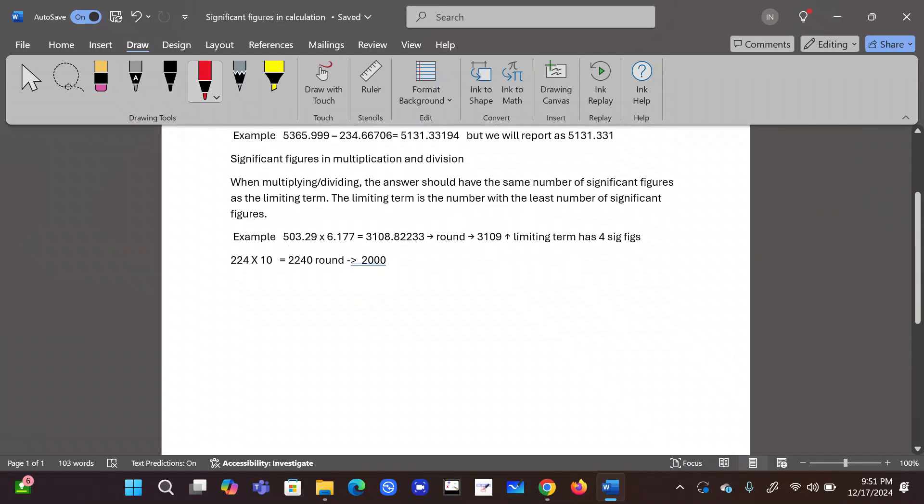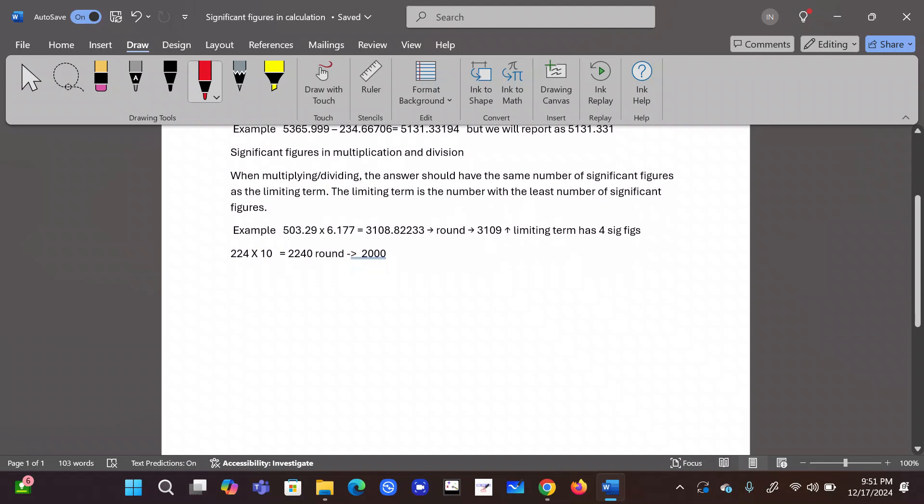When we multiply or divide, the rule of significant figures are: answers should have the same number of significant figures as the limiting terms. Limiting term is the number with the least number of significant figures. For example, here 503.29 multiplied by 6.177. So answer is this. This may be correct answer in your math class.